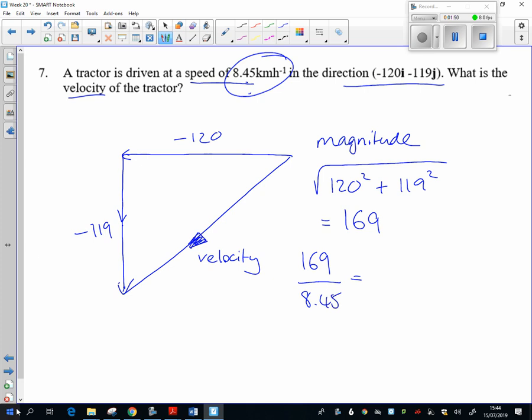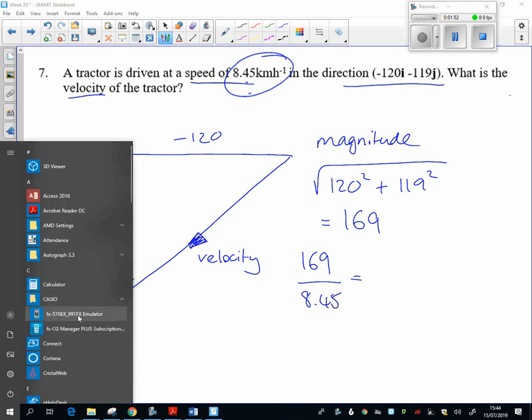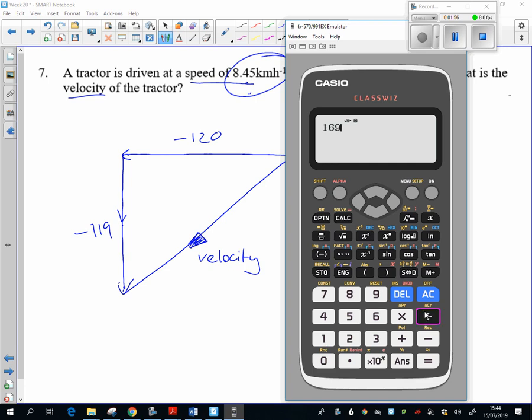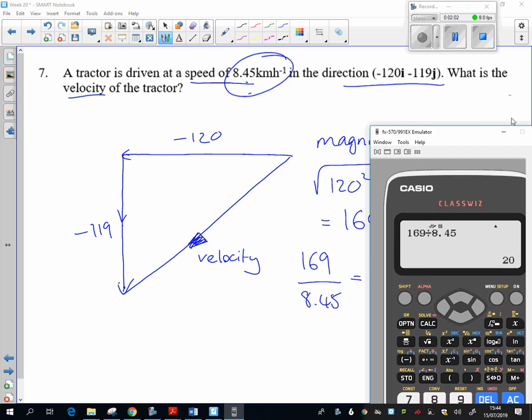So let's get the calculator back up. So 169 divided by 8.45, we get 20. It's always quite nice when you end up with nice round numbers.